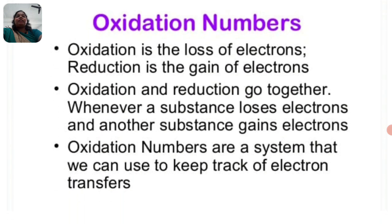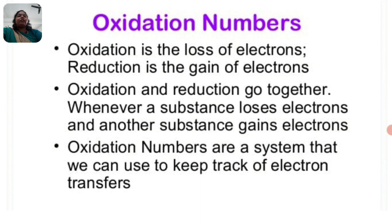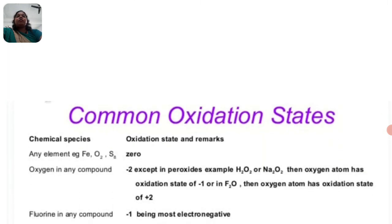Oxidation is the loss of electrons; reduction is the gain of electrons. In oxidation, electrons are lost, and in reduction, electrons are gained or accepted. Oxidation and reduction always go together — if one substance loses electrons, another substance accepts those electrons. The oxidation number system helps us keep track of which substance lost electrons and which substance gained electrons.